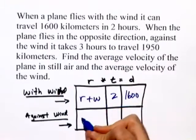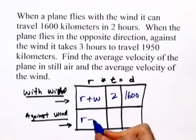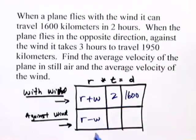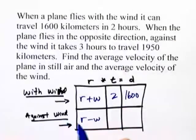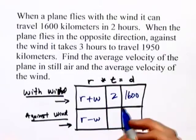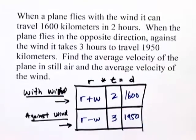When it's going against the wind, it's got the speed of the plane minus the wind since the wind is cutting into its speed. In this case, since it's going against the wind, it takes longer time, in this case 3 hours, to go 1,950 kilometers.